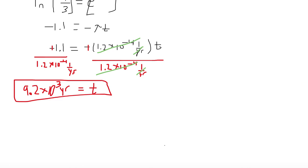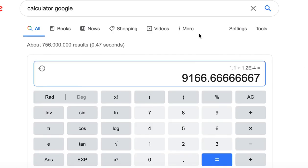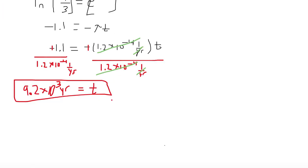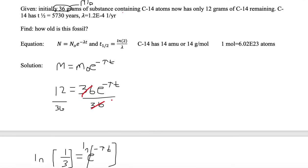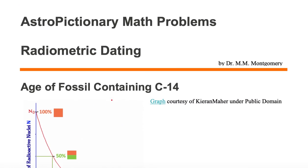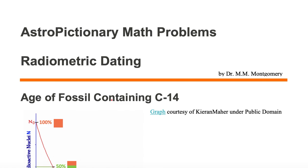So as you can see, it's around 9,200 years. That is the age of this fossil containing carbon-14.